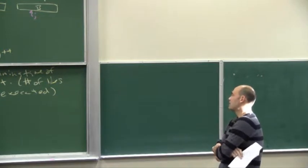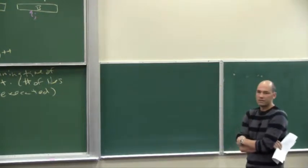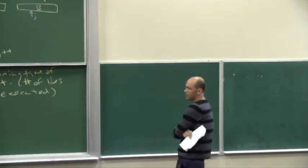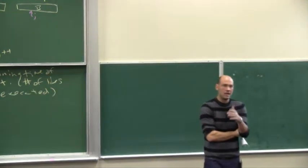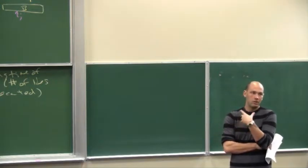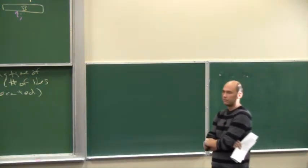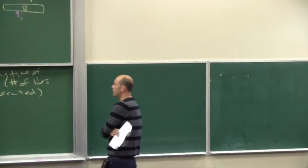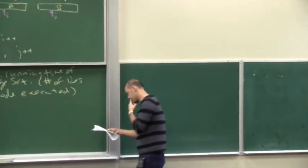But what I want you to think about is tracing through this algorithm or this source code in a debugger. Where every time you hit enter, another line executes. So what I'm asking is how many times you have to hit enter until the merge sort algorithm terminates. That's what I mean by the number of lines of code executed.